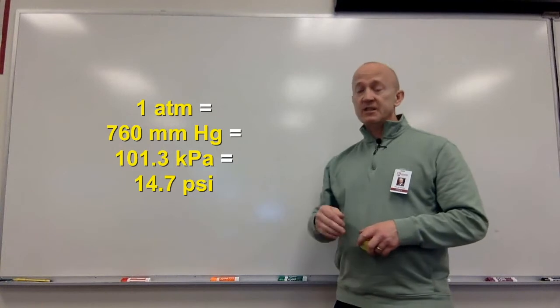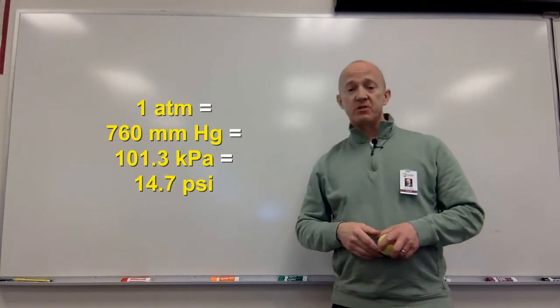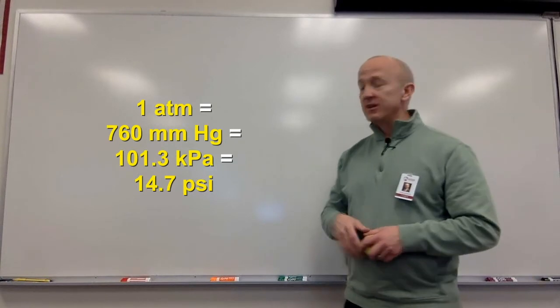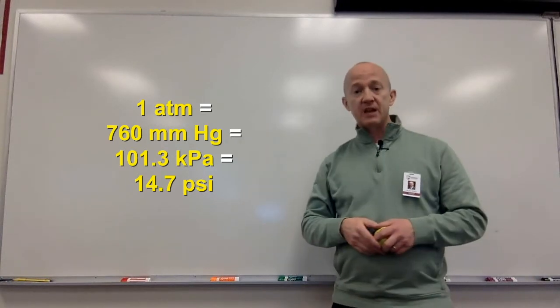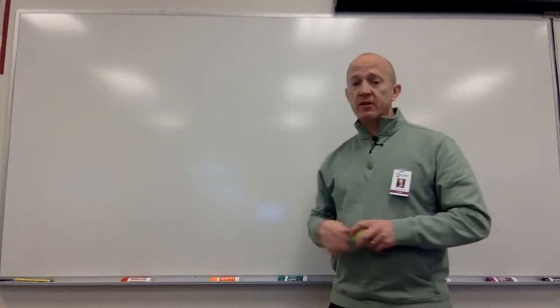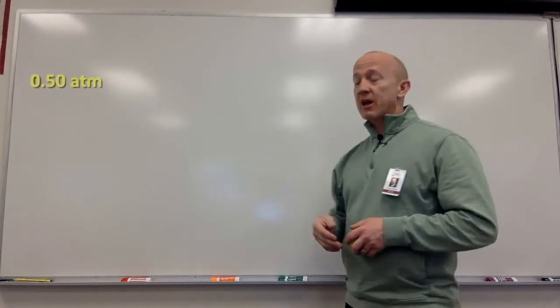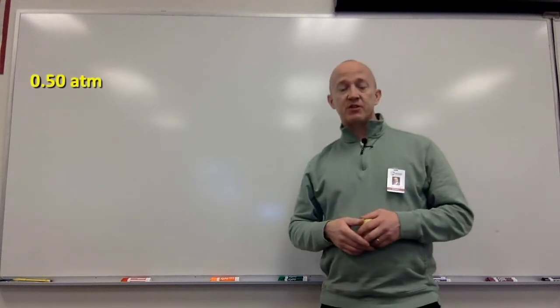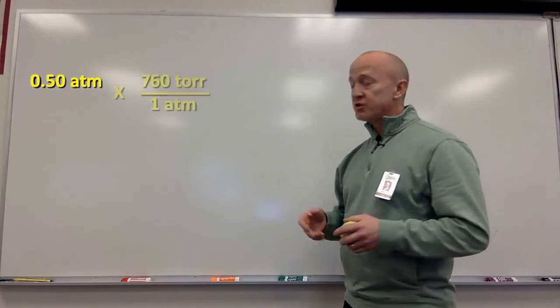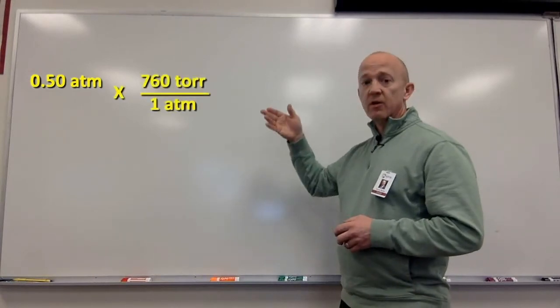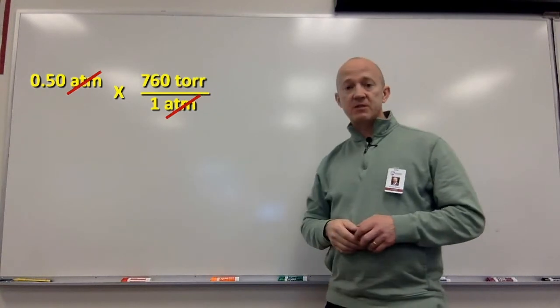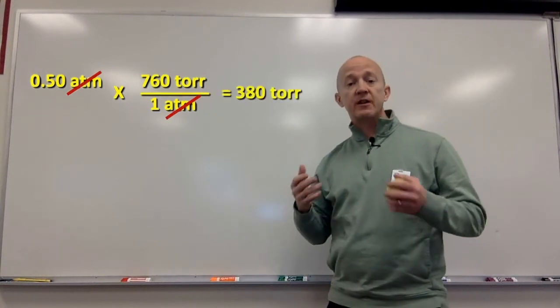Again, one atmosphere is equal to 760 millimeters of mercury, is equal to 101.3 kilopascals, is equal to 14.7 pounds per square inch. Whenever we want to make conversions from one to the other, it's pretty simple. Like so. So, let's say we have 0.5 atmospheres of pressure. How many tor would that be? All we do is use a conversion factor. 760 tor for every one atmosphere. In this case, we'll multiply 0.5 times 760 to get 380 tor. So, 0.5 atmospheres is equal to 380 millimeters of mercury, or 380 tor.